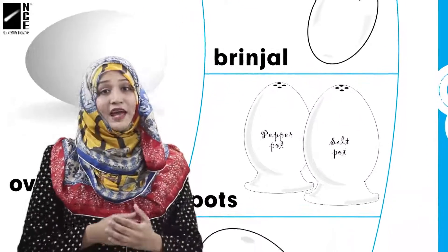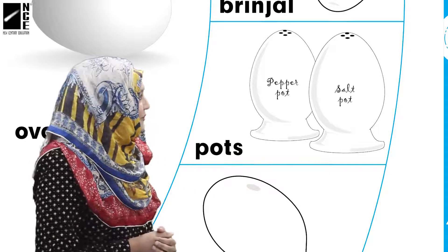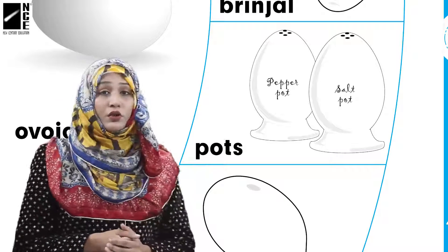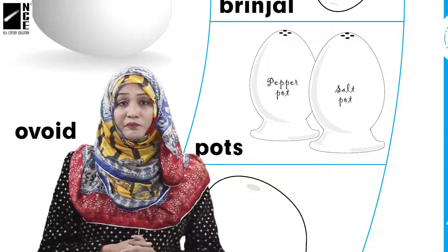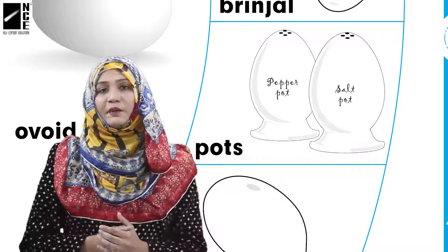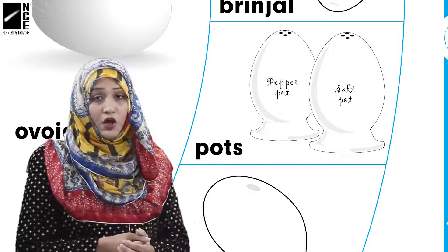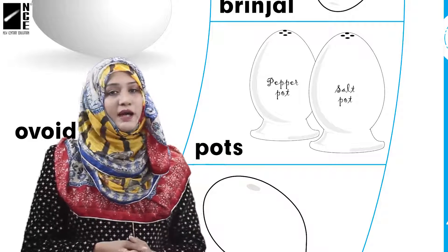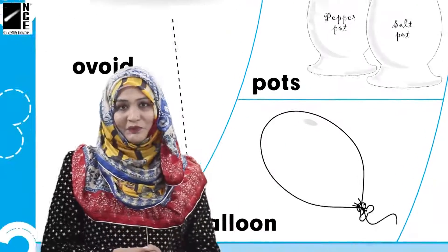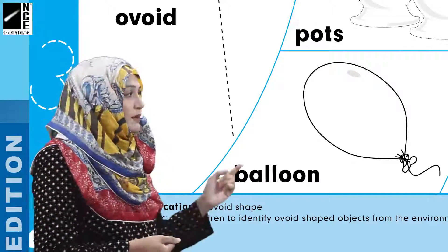After the brinjal we have another shape, another picture. I have so many answers to tell you, so I will tell you what the shape is. If you don't have a shape, you don't have a shape. In the last picture, we have to tell you what the shape is — the last one is the balloon.